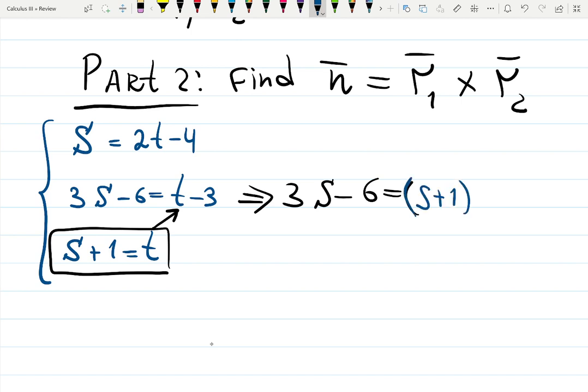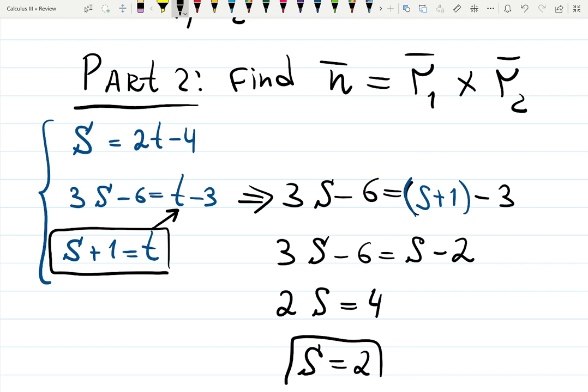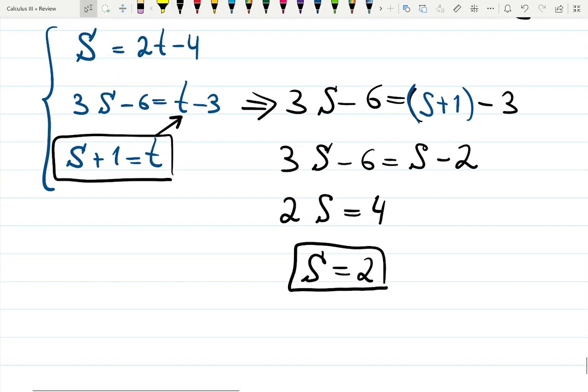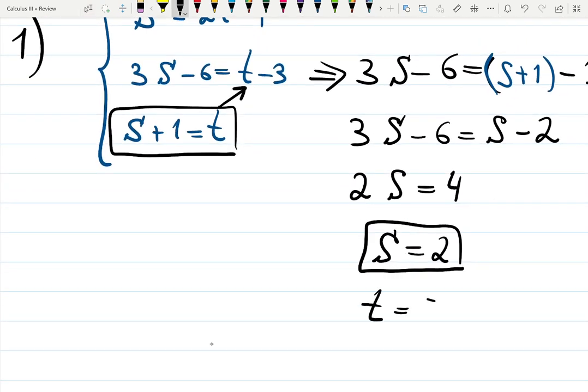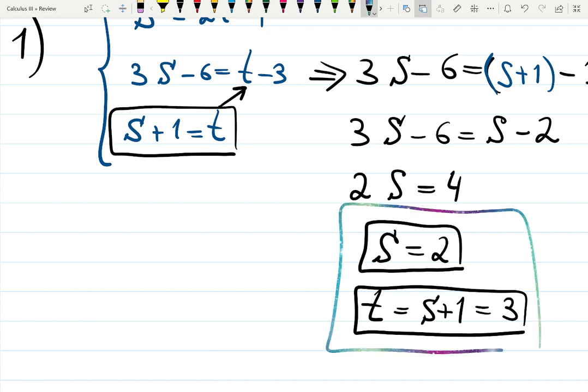I would just use t = s+1 and let's plug it here. 3s-6 equals s+1-3, so simplify: 3s-6 = s-2. Move unknowns to the left: 3s-s = 2s. Move the constant to the right: -2+6 = 4. Divide by 2, s = 2. Right, now we can find t. If s is 2, t is s+1 = 2+1 which is 3. So step 1 is successfully done, we found s and t.